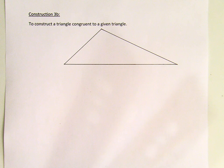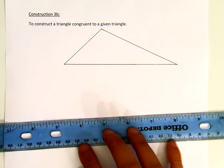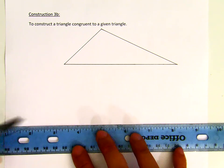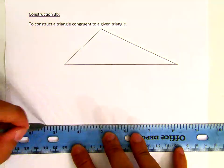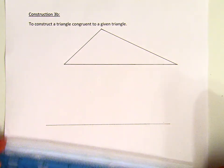Suppose we start from this given triangle here. What we will do first, if we want to construct it, we will first draw a line as a reference line. I will use pencil first. I hope it is thick enough for you to see.